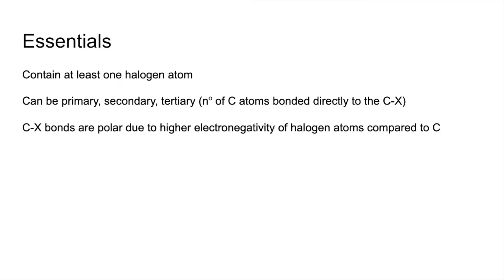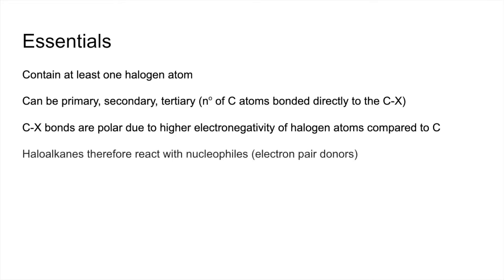Carbon-halogen bonds are polar due to the higher electronegativity of the halogen atoms compared to carbon. So the carbon would be slightly positive, delta plus, and the halogen would be delta negative. Haloalkanes will therefore react with nucleophiles — electron-pair donors — and they undergo nucleophilic substitution reactions.